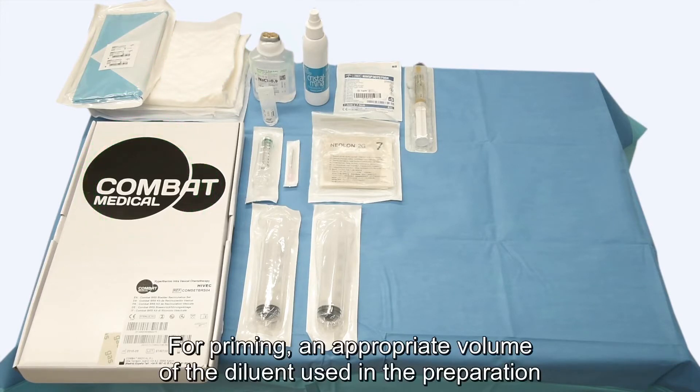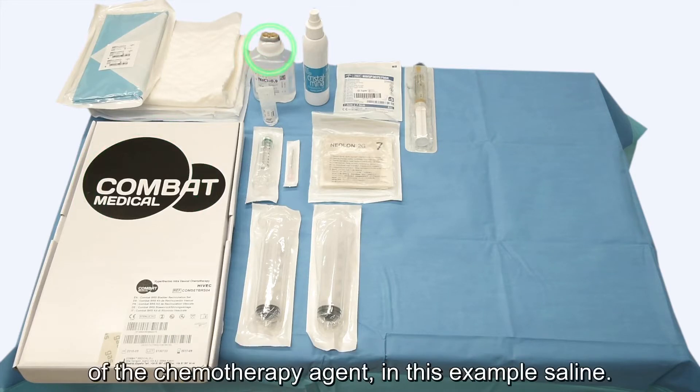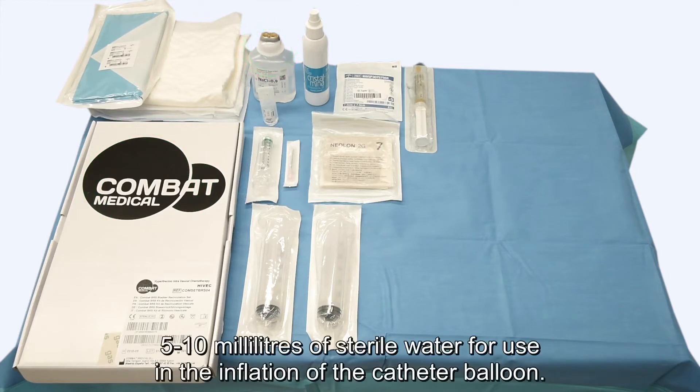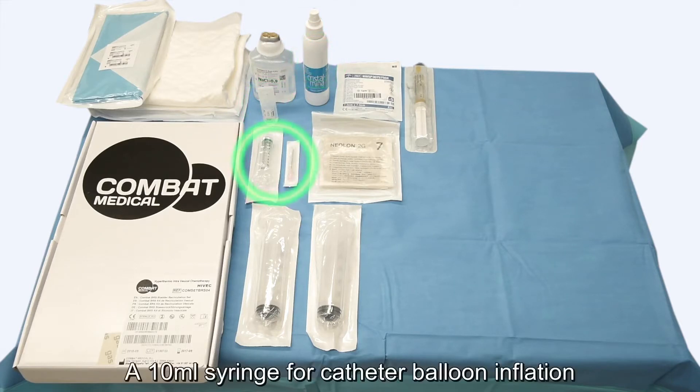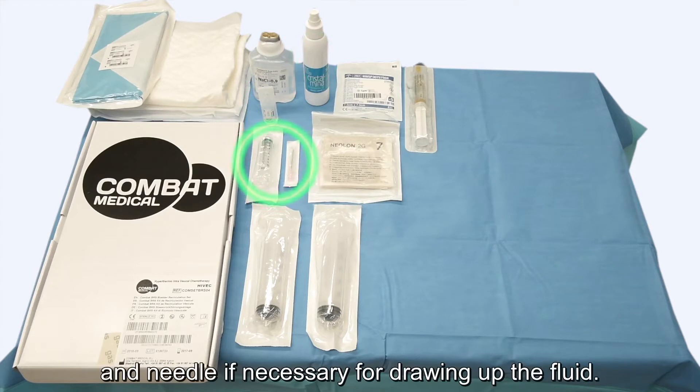For priming, an appropriate volume of the diluent used in the preparation of the chemotherapy agent, in this example saline. 5 to 10 millilitres of sterile water for use in the inflation of the catheter balloon. An appropriate local disinfectant. A 10 ml syringe for catheter balloon inflation and needle if necessary for drawing up the fluid.